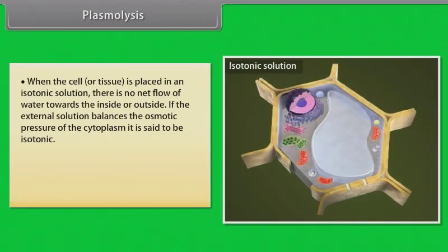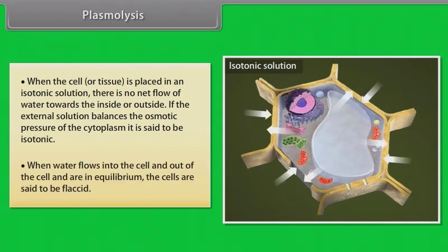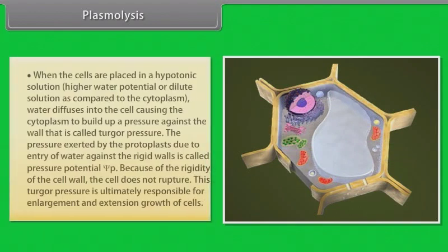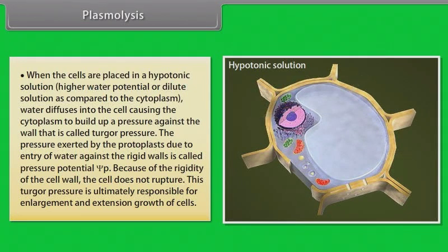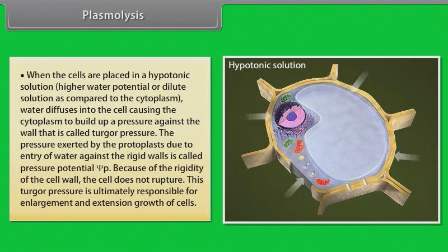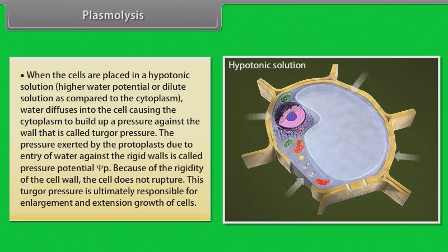When the cell or tissue is placed in an isotonic solution, there is no net flow of water towards the inside or outside; when water flows in and out in equilibrium, the cells are said to be flaccid. The process of plasmolysis is usually reversible. When cells are placed in a hypotonic solution — one with higher water potential or more dilute than the cytoplasm — water diffuses into the cell, causing the cytoplasm to build up a pressure against the wall called turgor pressure. The pressure exerted by the protoplast due to entry of water against the rigid wall is called pressure potential. Because of the rigidity of the cell wall, the cell does not rupture. This turgor pressure is ultimately responsible for enlargement and extension growth of cells.